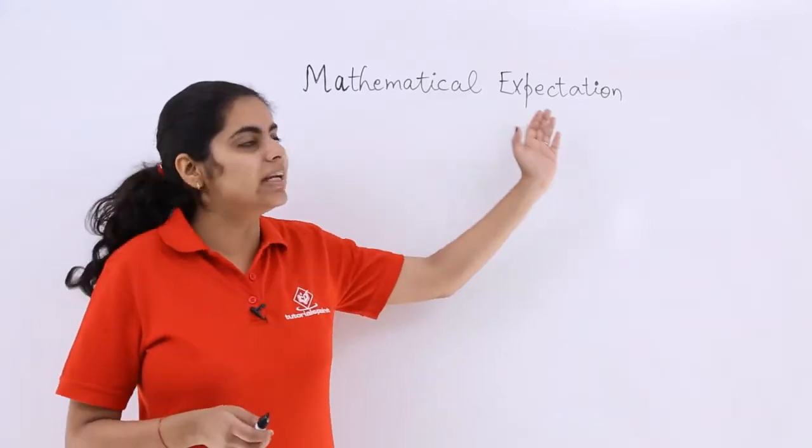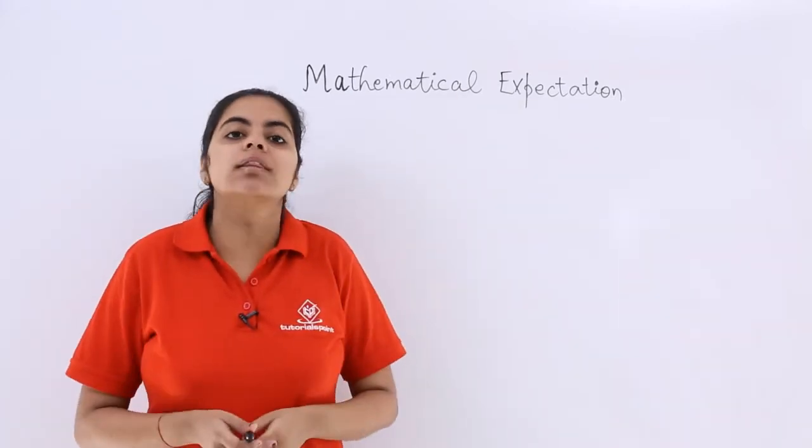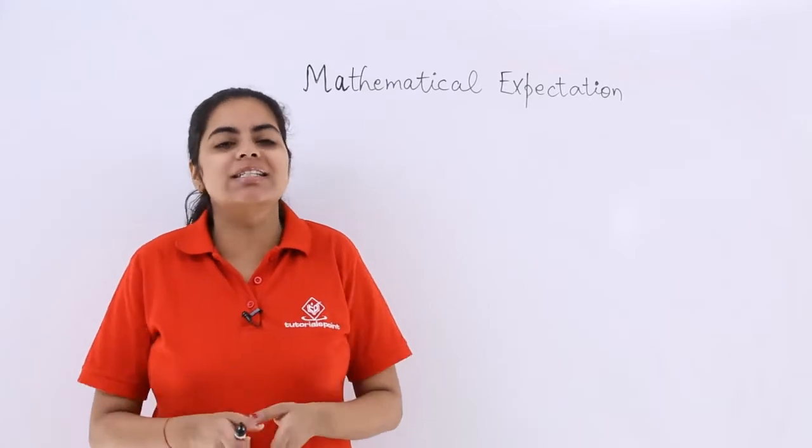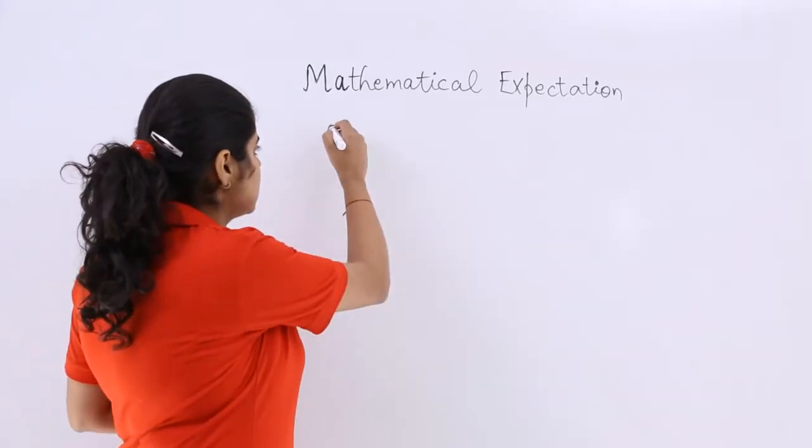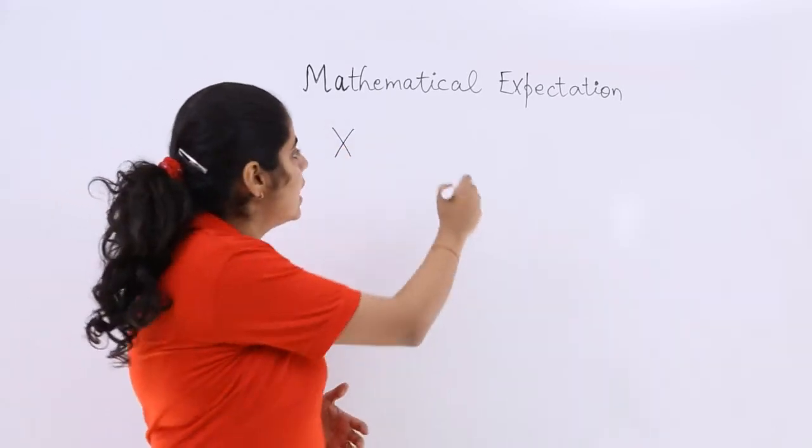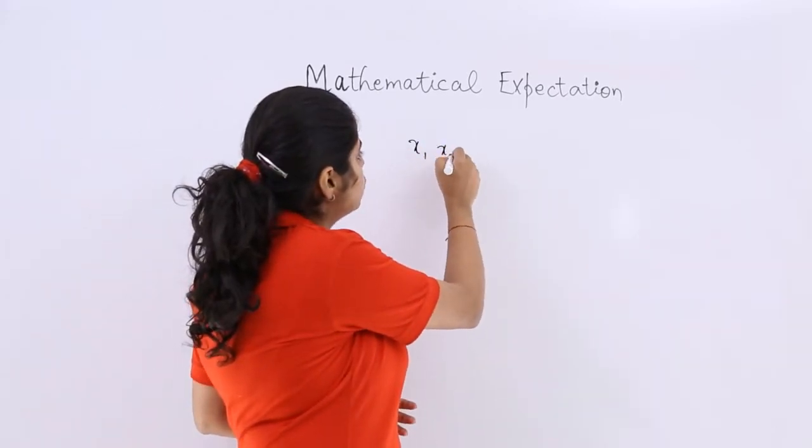Let us know what is known as mathematical expectation or the mean of a discrete random variable. So if you have a random variable X which can assume different values like x1, x2,